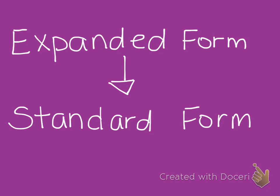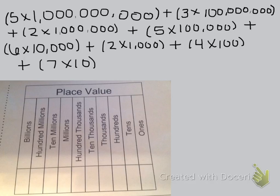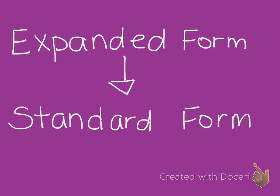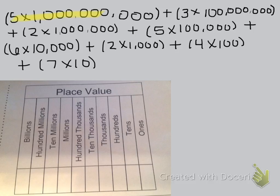The last thing we're going to look at is how to go from expanded form to standard form. It's really helpful to use a place value chart when doing these types of problems. Here I've written a number in expanded form using parentheses with my place value chart at the bottom. Looking at my first part, I have 5 times 1 billion, so the 5 goes in the billions place. Then I have 3 times 100 million, so my 3 goes in the hundred millions place. If you're not sure what place it goes in, you can count how many digits it is — 1 through 9.